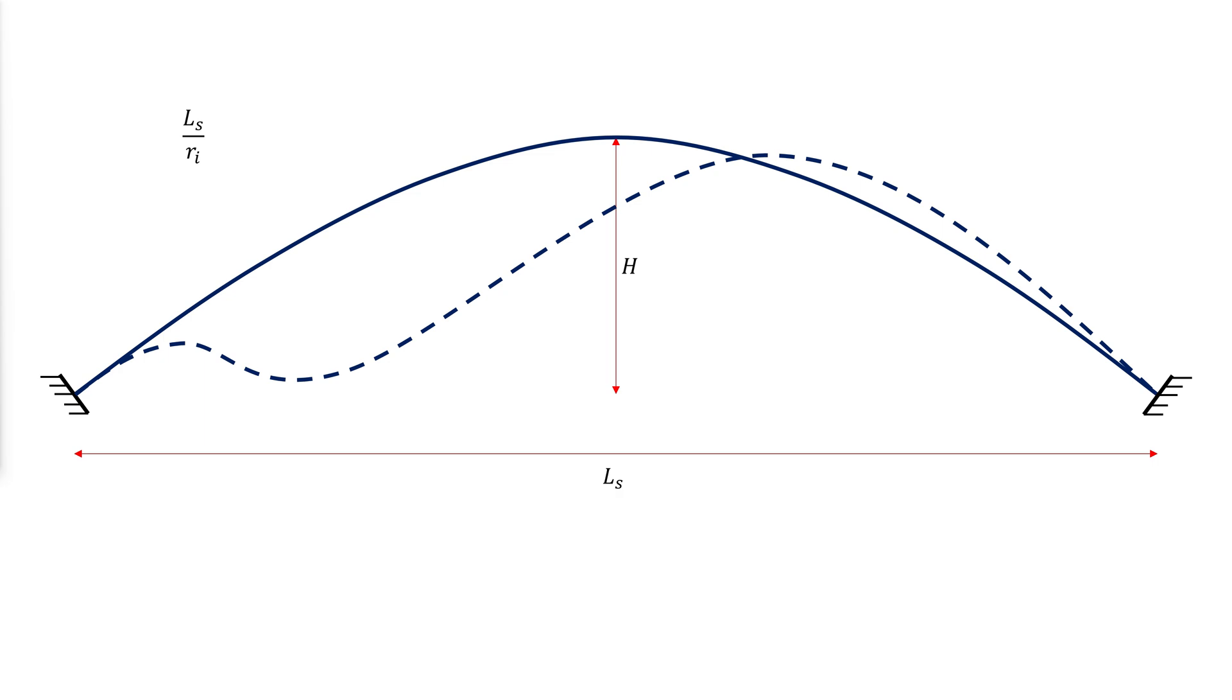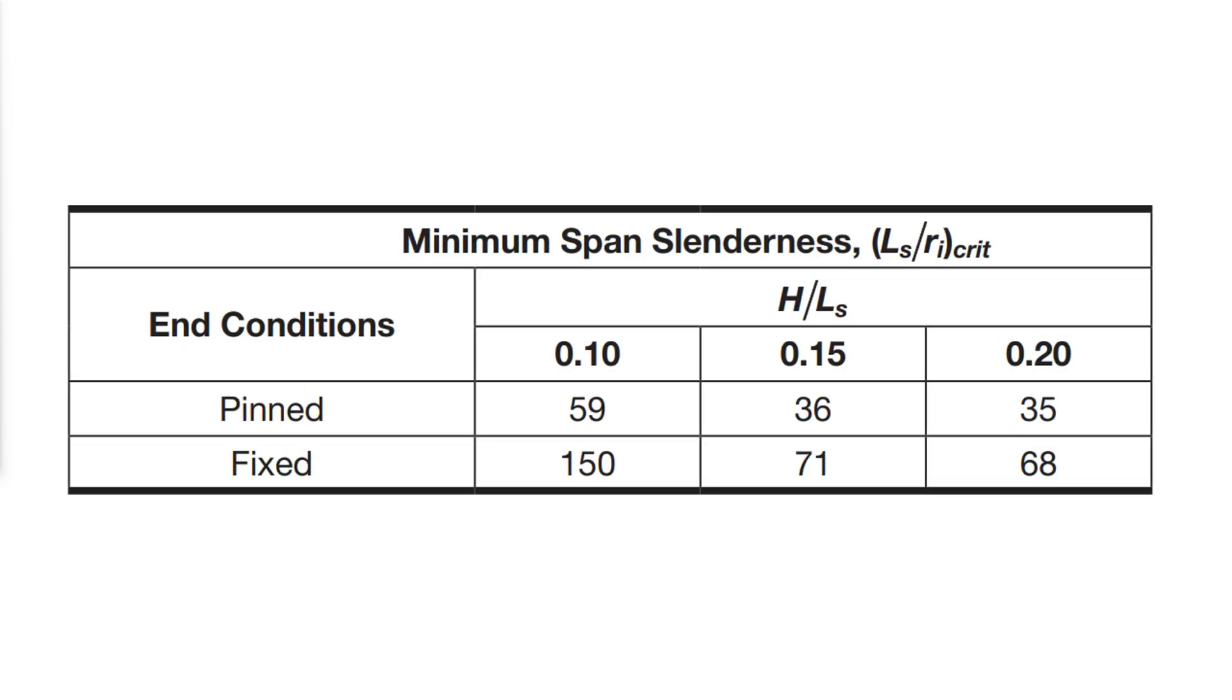Where Ls is the span distance and Ri is the in-plane radius of gyration. Minimum span slenderness values Ls over Ri critical for pinned and fixed-end conditions and rise-to-span ratios H over Ls between 0.1 and 0.2 are listed in this table.